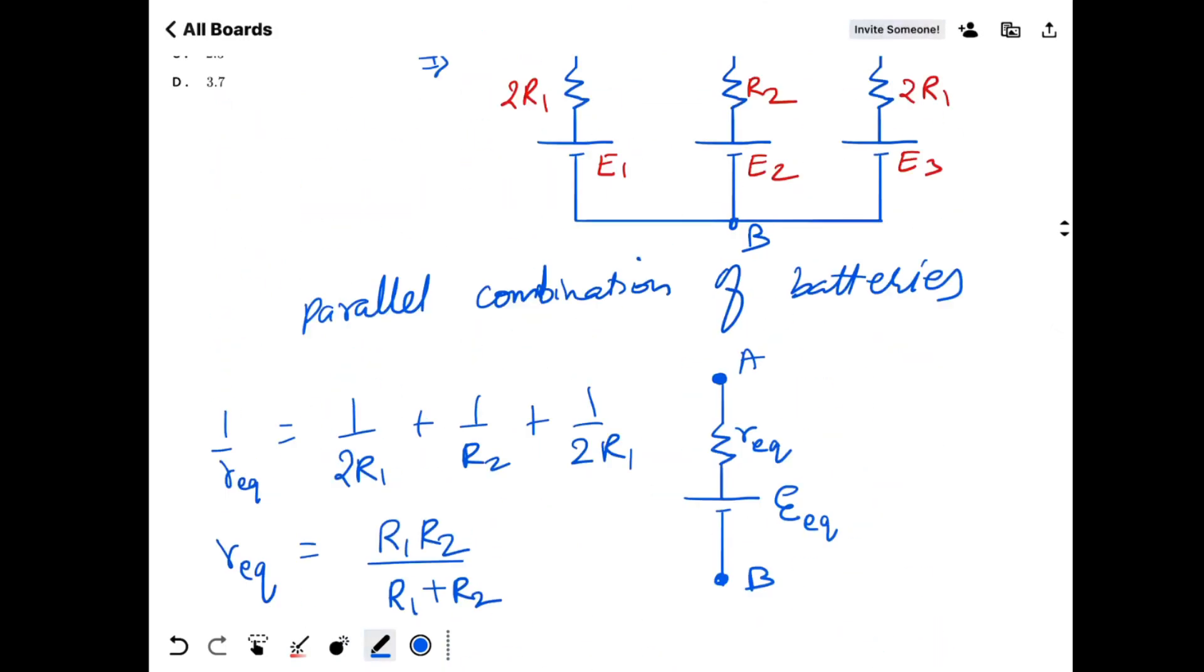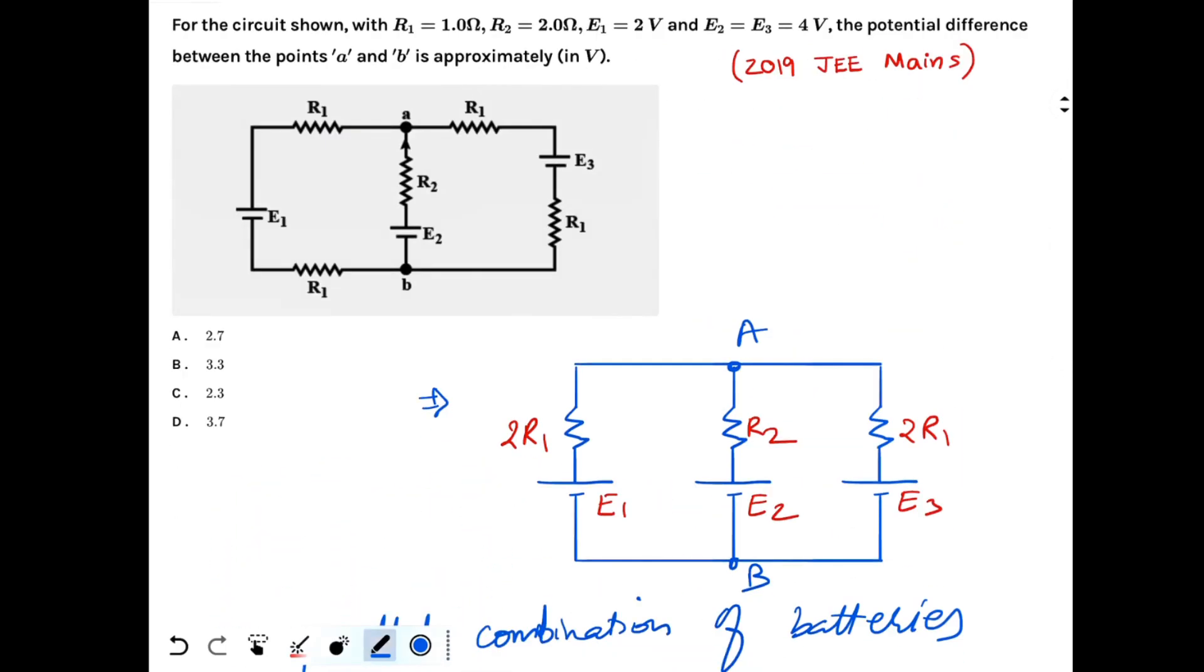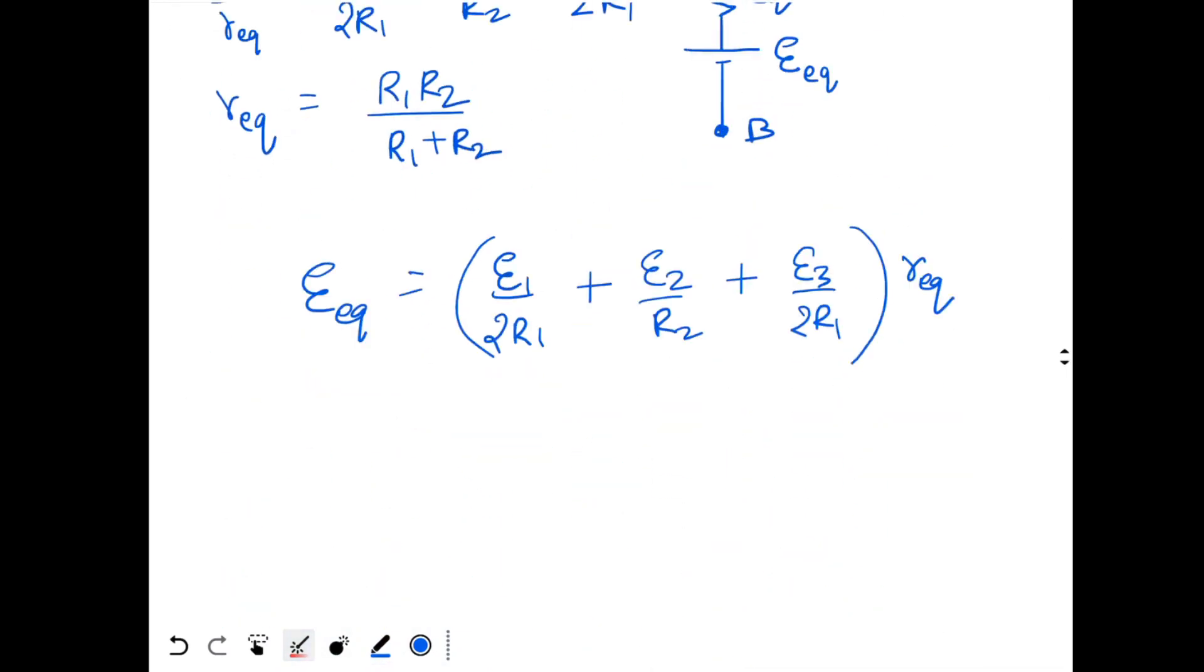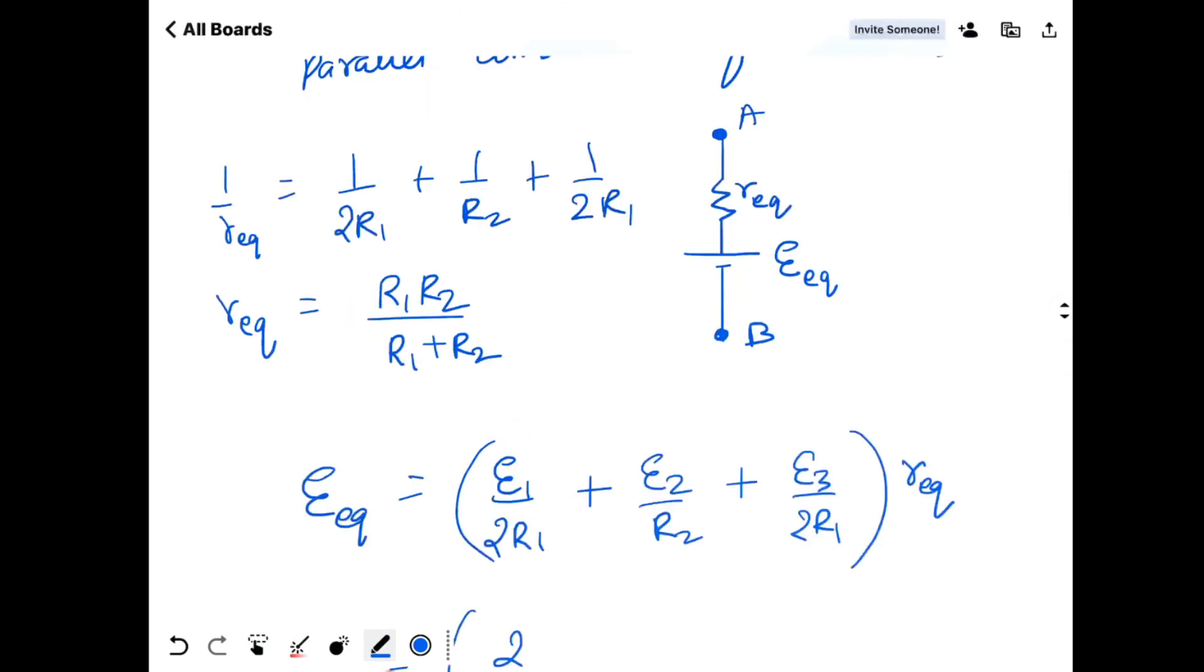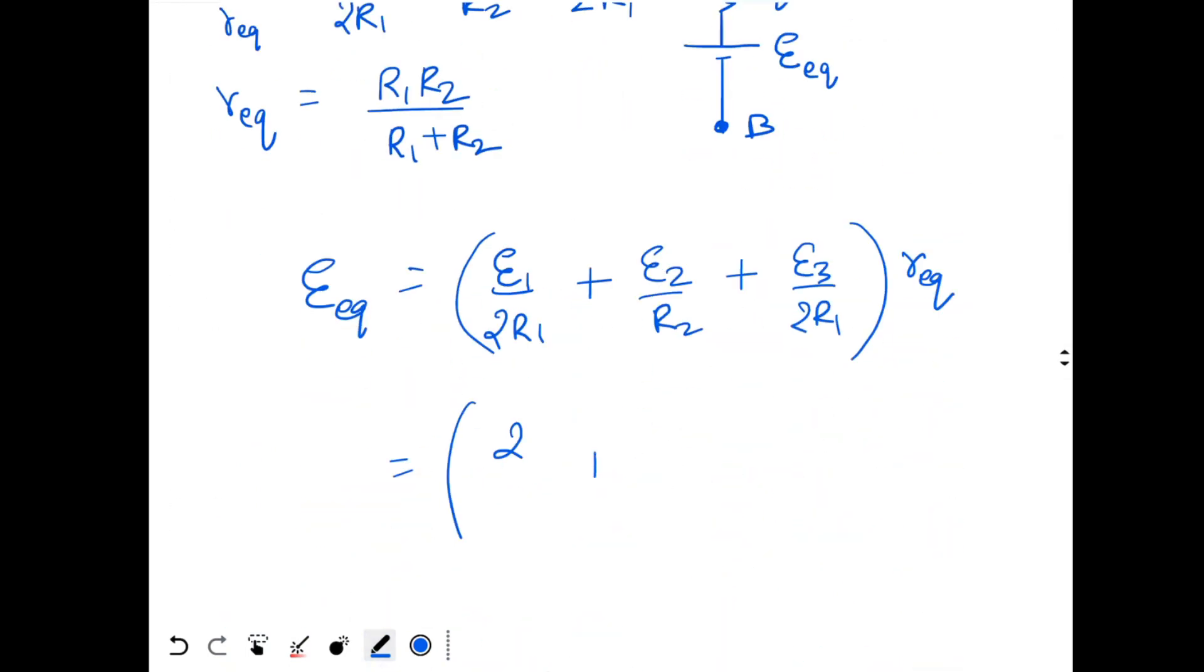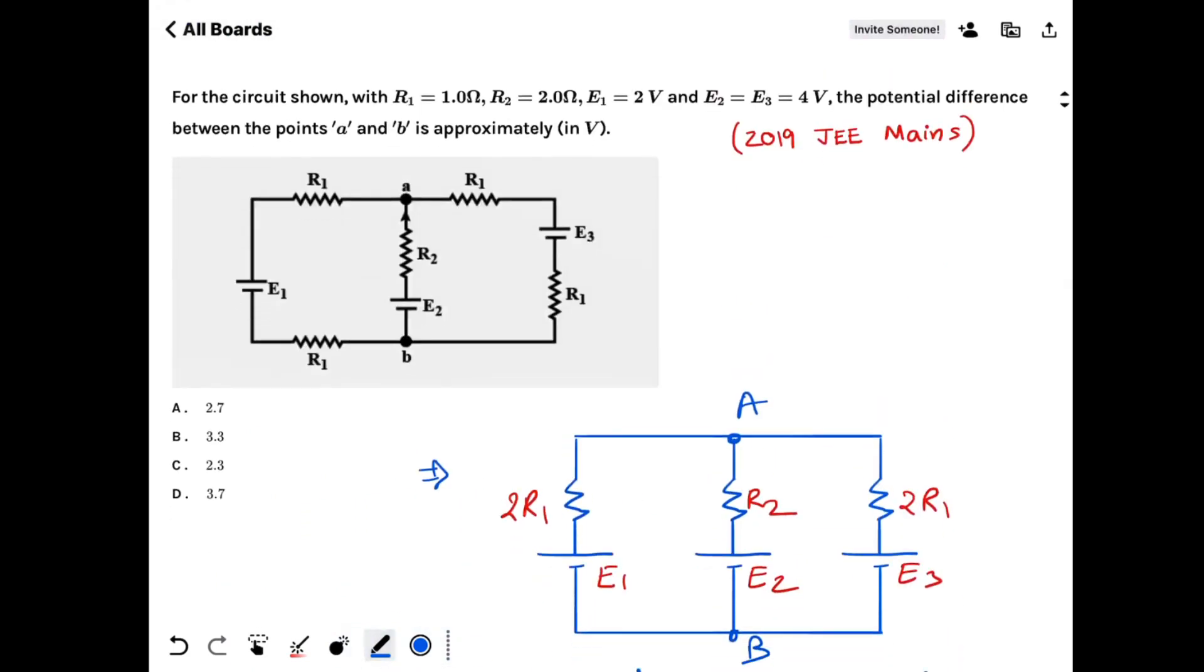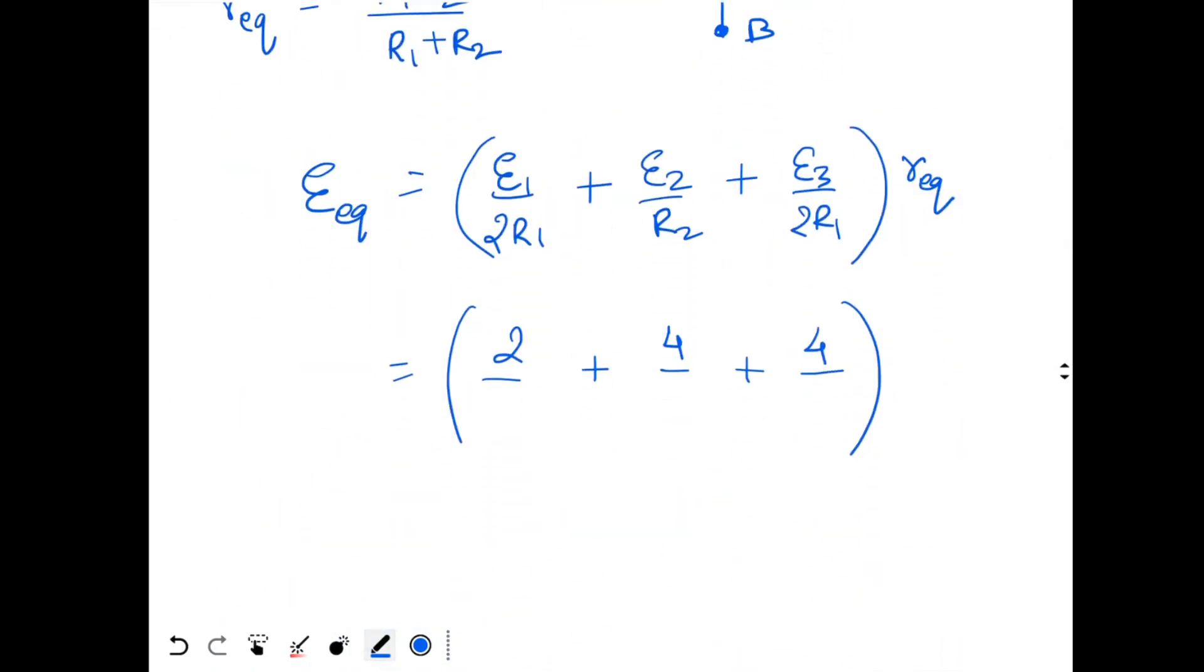So we just need to put the values. When you put the values we have R1 is 1 ohm, R2 is 2 ohms, E1 is 2 volt, E2 and E3 are 4 volt. So we get E1 is 2 volt, E2 is 4 volt, E3 is 4 volt, R1 is 1 ohm, R2 is 2 ohms. So 2 into 1, 2, 2, and again 2 over here.